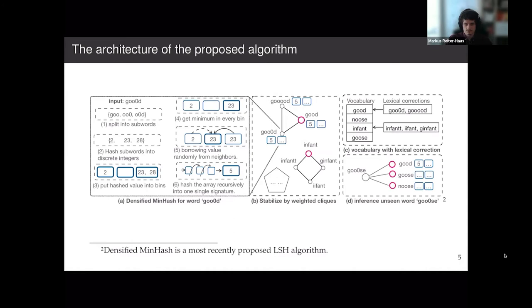By looking at the graph, we notice that we can extract the vocabulary out from it. So first, let's just look at the first component. We find that the word good appears quite frequently in the dataset when we compare to the other two words. So we are safe to say that good should be the correct form, and the others should be some typos. So we use the leading words in every connected component, and they compose a vocabulary. And all the other words should be considered as lexical corrections.